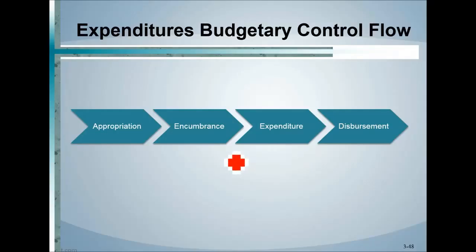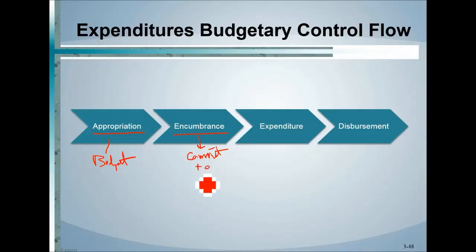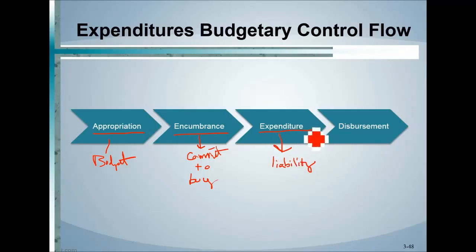To summarize the full cycle: the appropriation is the budget; the encumbrance is the commitment to purchase; the expenditure is when goods are received and a liability is owed to the vendor; and the disbursement is the actual cash payment at the very end. Cash going out the door is the final step in the process.